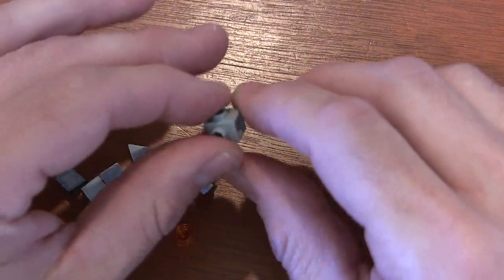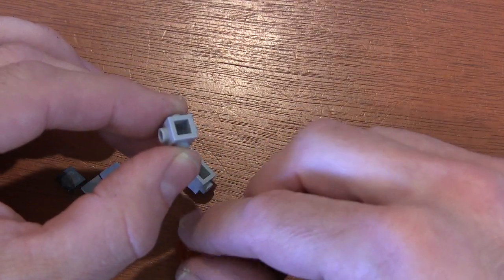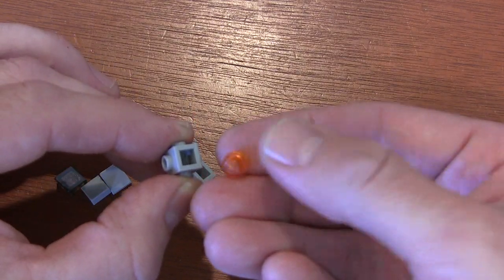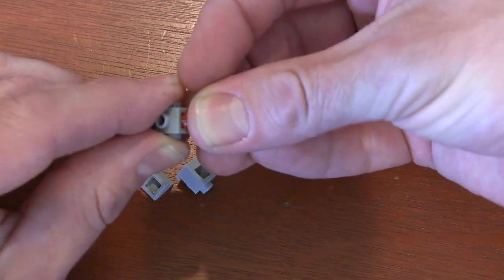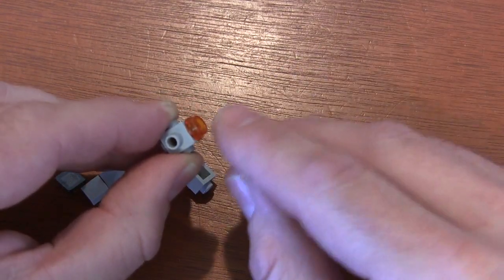The first thing we're gonna do is grab my favorite piece, the Travis brick, and that big old hole in the Travis brick is gonna be the back of our plane. So we're gonna get a round translucent orange plate and just put it right there in that big hole in the back, and that's gonna be the thrusters or the fire shooting out of the back of our jet to propel it through the air.